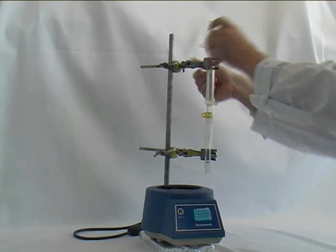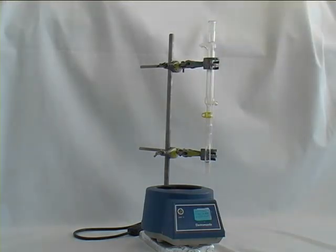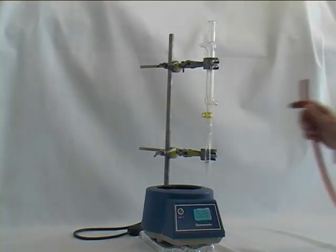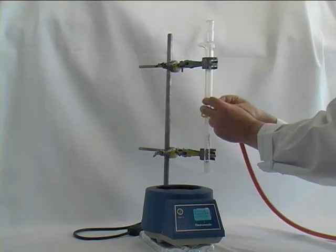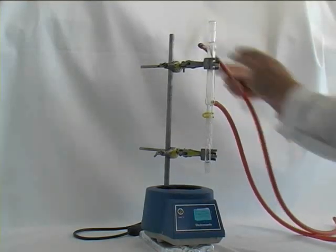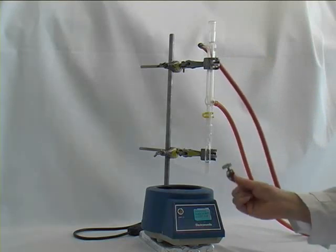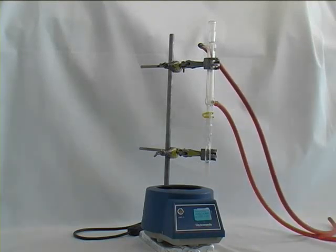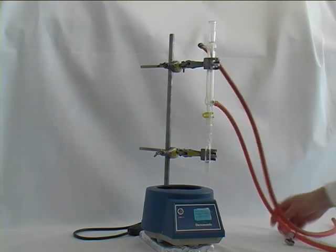Before we set up the rest of the apparatus, we turn the apparatus a little bit out of the way, and we add the tubing to the condenser. Please make sure that you secure the tubing to the condenser using jubilee clips.